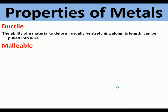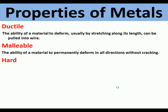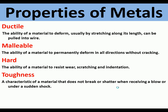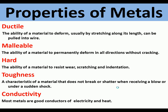Properties of metal: ductile is the ability of a material to deform by stretching along its length so it can be pulled into wire. Malleable is the ability to deform — to be hit and knocked without cracking. Hard is the ability of a metal to resist wear like scratching and indentation. Toughness is the characteristic of a metal that does not break or shatter when receiving a blow or under sudden shock. Conductivity is being a conductor of heat and electricity.